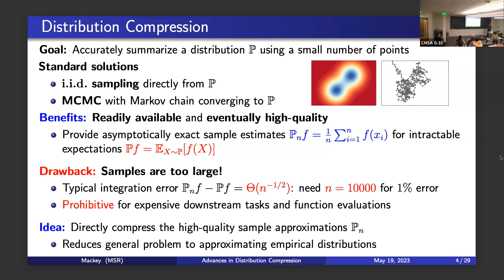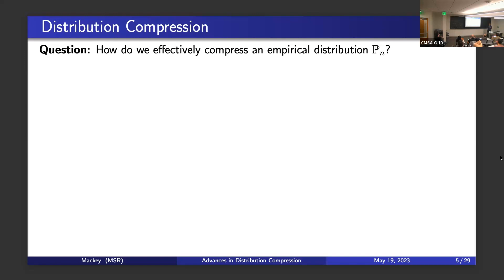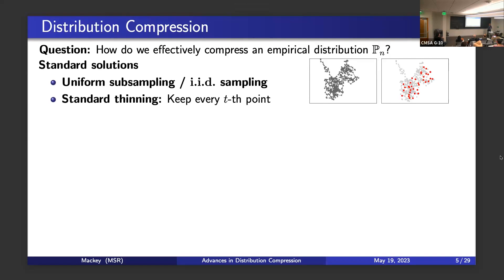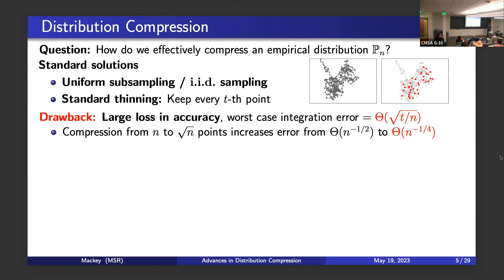Here's an idea: start with readily available high-quality approximations from MCMC and then compress one of those empirical distributions Pn, instead of compressing the original distribution P. You could do uniform subsampling, IID sampling from the empirical distribution, or in MCMC, standard thinning — keeping every t-th point. The problem with standard thinning is a large loss in accuracy. Worst-case integration error grows like square root T over n, so heavy compression from n points down to square root n blows up to n to the minus one quarter — a big hit from the original n to the minus one half.